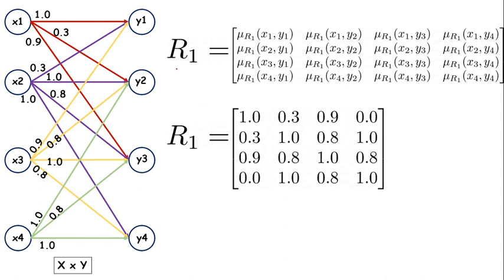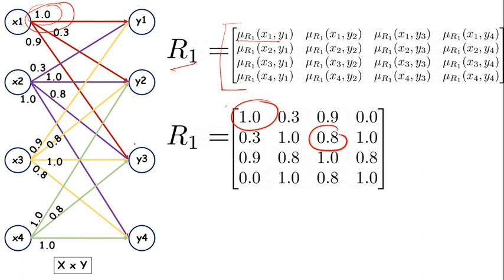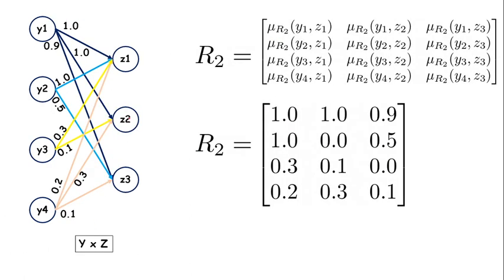This relation is named R1, and we represent it through the matrix representation technique. Here we have mu R1(X1, Y1), indicating the membership function value between X1 and Y1, which is 1.0. Similarly, the value between X2 and Y3 is 0.8. You plug in all those values to get the R1 matrix, and using the same technique we represent the Y and Z relation through R2.